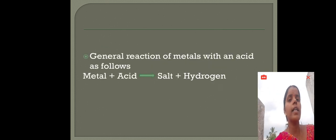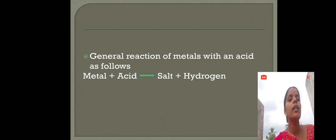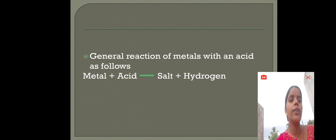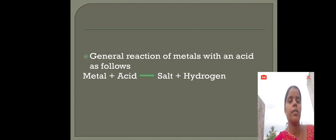The general reaction of metals with an acid is as follows. We know that zinc is a metal. Any metal reacting with an acid gives salt and hydrogen gas. The general reaction is: metal plus acid gives salt plus hydrogen.